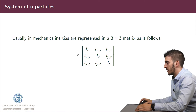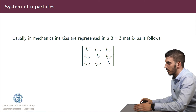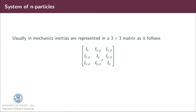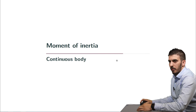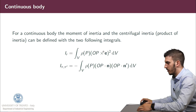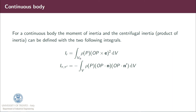In mechanics, inertia are represented in a 3 by 3 matrix. On the diagonal we have the moments of inertia with respect to the axes, and outside the diagonal we have the centrifugal moments of inertia with respect to the planes. This matrix is also symmetric. For a continuous body, we define the moment of inertia as the integral over the volume of rho of P times the squared modulus of OP cross product E times dV. The centrifugal moment of inertia with respect to the two planes π and π prime equals minus the integral over the volume of rho of P times (OP dot N) times (OP dot N prime) dV, where E is the unit vector of line R and N, N prime are the orthogonal vectors to the planes.